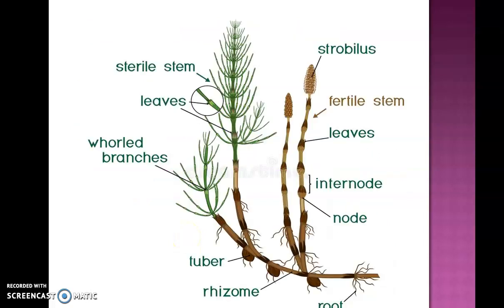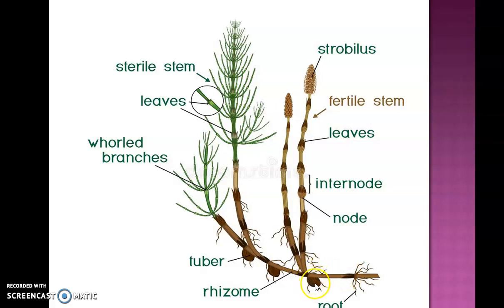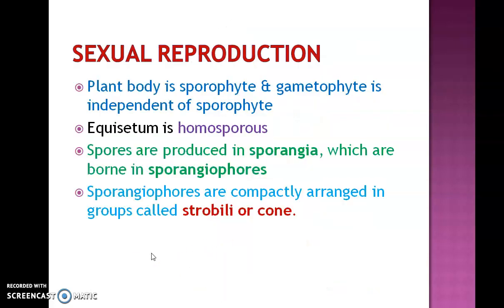Here is a detailed structure of the sporophyte showing the rhizome having numerous nodes and internodes. From the nodes, stem tubers arise. After maturity, the tubers get detached from the parent plant and develop into a new sporophyte.